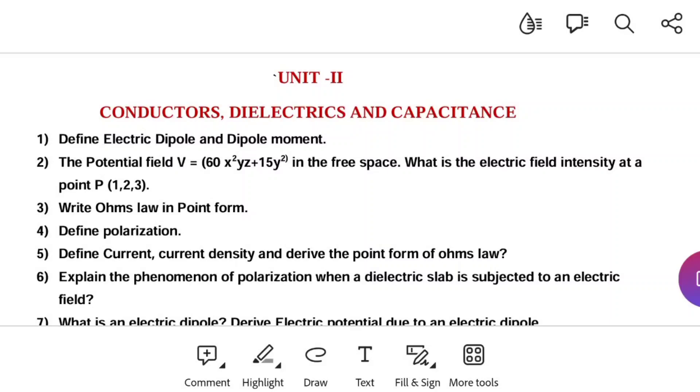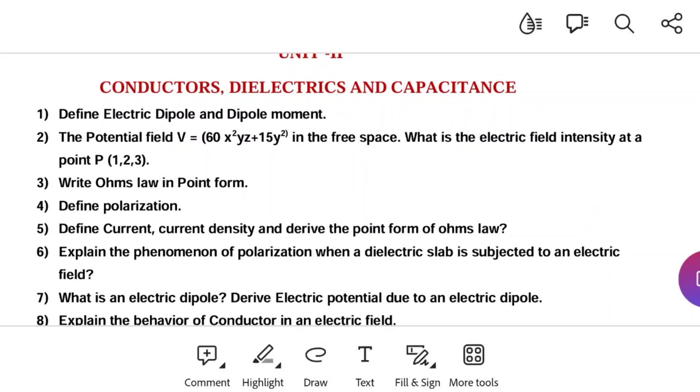Coming to potential field, the potential field is given by the equation V = 60x²yz + 15y² in free space. What is the electric field intensity at point P(1,2,3)? Del dot E equal to...